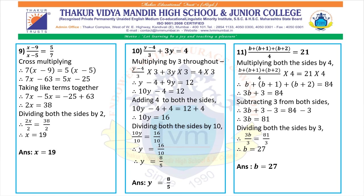Eleventh: (b plus b plus 1 plus b plus 2) upon 4 equals 21. Multiplying both sides by 4: b plus (b plus 1) plus (b plus 2) equals 84. Adding like terms: 3b plus 3 equals 84. Subtracting 3 from both sides: 3b equals 81. Dividing both sides by 3: 3b upon 3 equals 81 upon 3, so b equals 27. The answer is b equals 27.